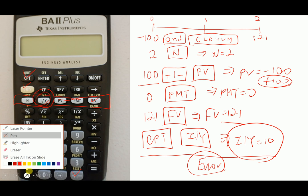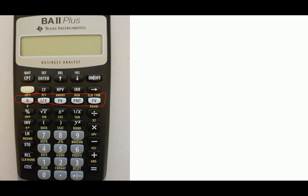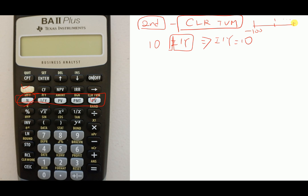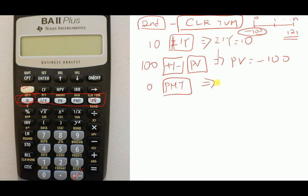Let's use it. We use this one. Again, clear it - second, CLR TVM - clear the previous memories. We don't know N. We know I over Y is 10 percent, so interest rate 10 percent. PV is 100 but it's negative 100. Again you make a deposit of 100 dollars, receive 121 in some day. So 100, change the sign, press PV. Then you have PV equal to negative 100. PMT is equal to zero always for this chapter. Future value is 121.